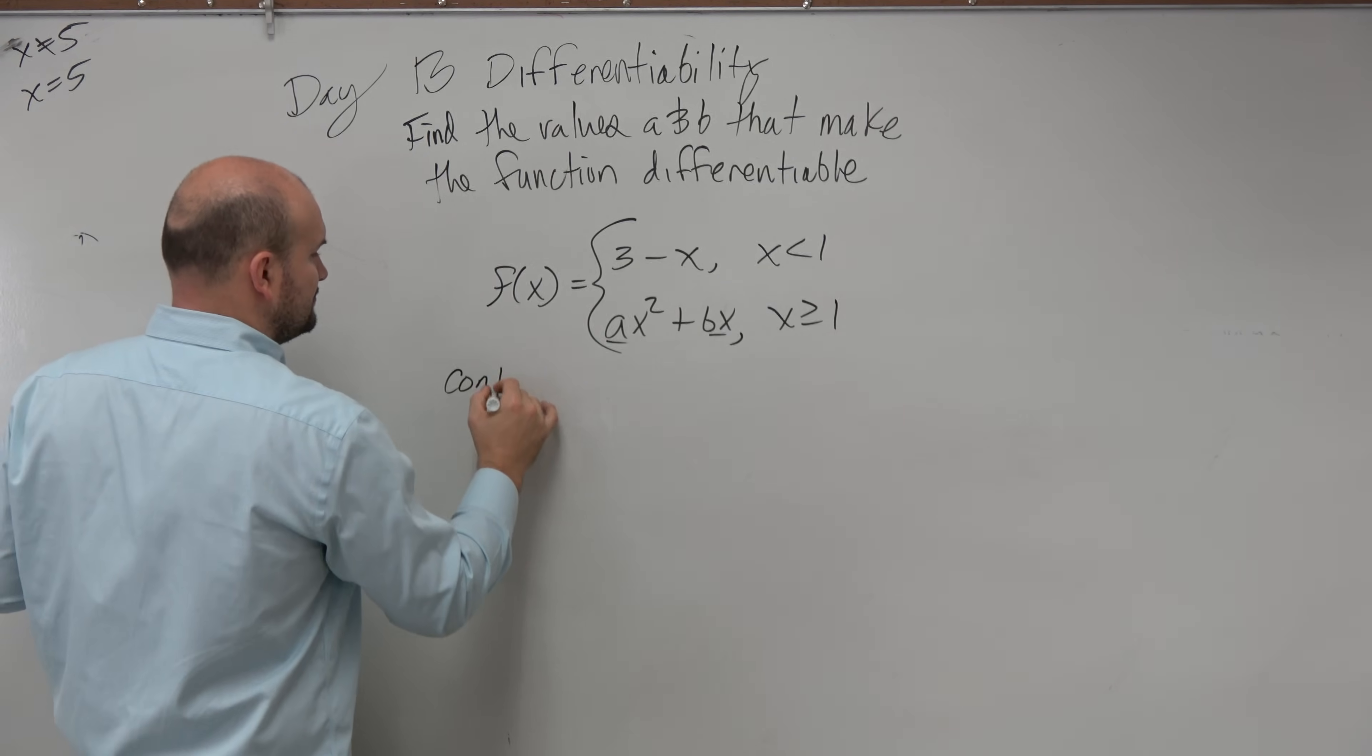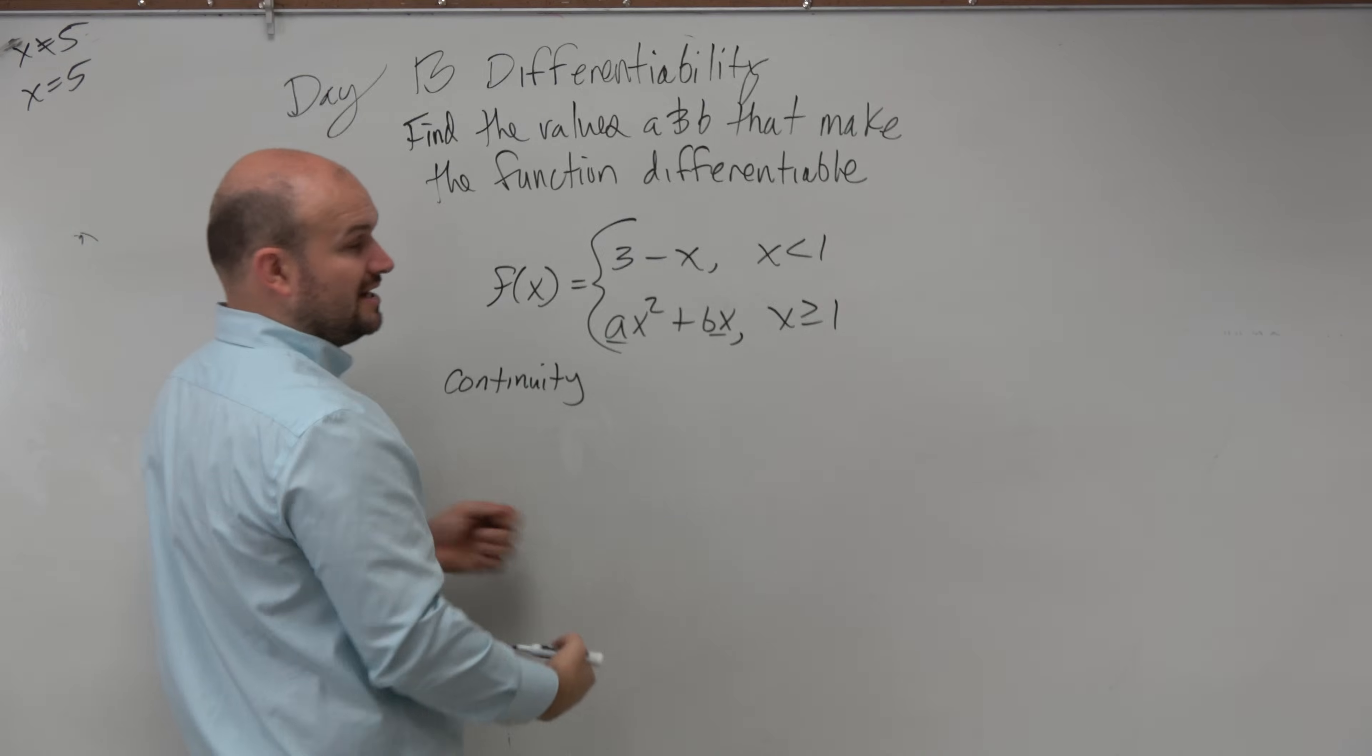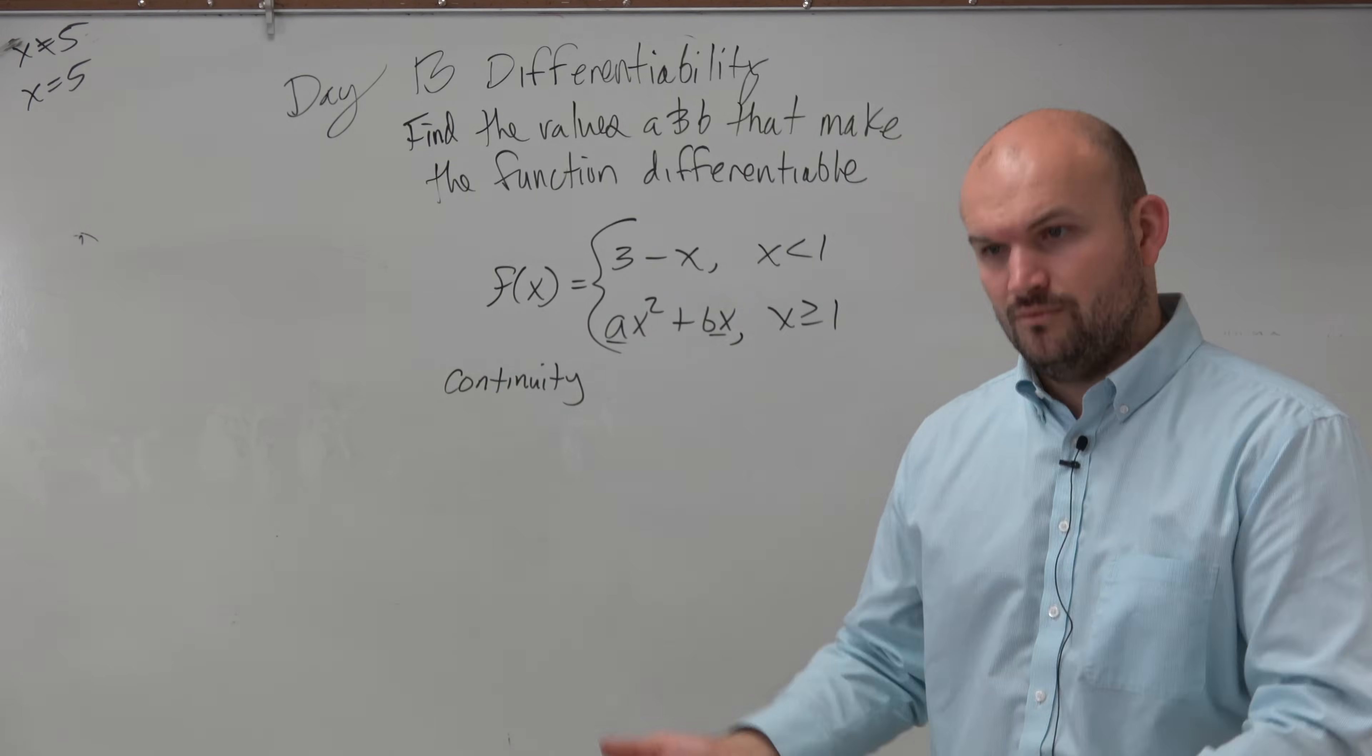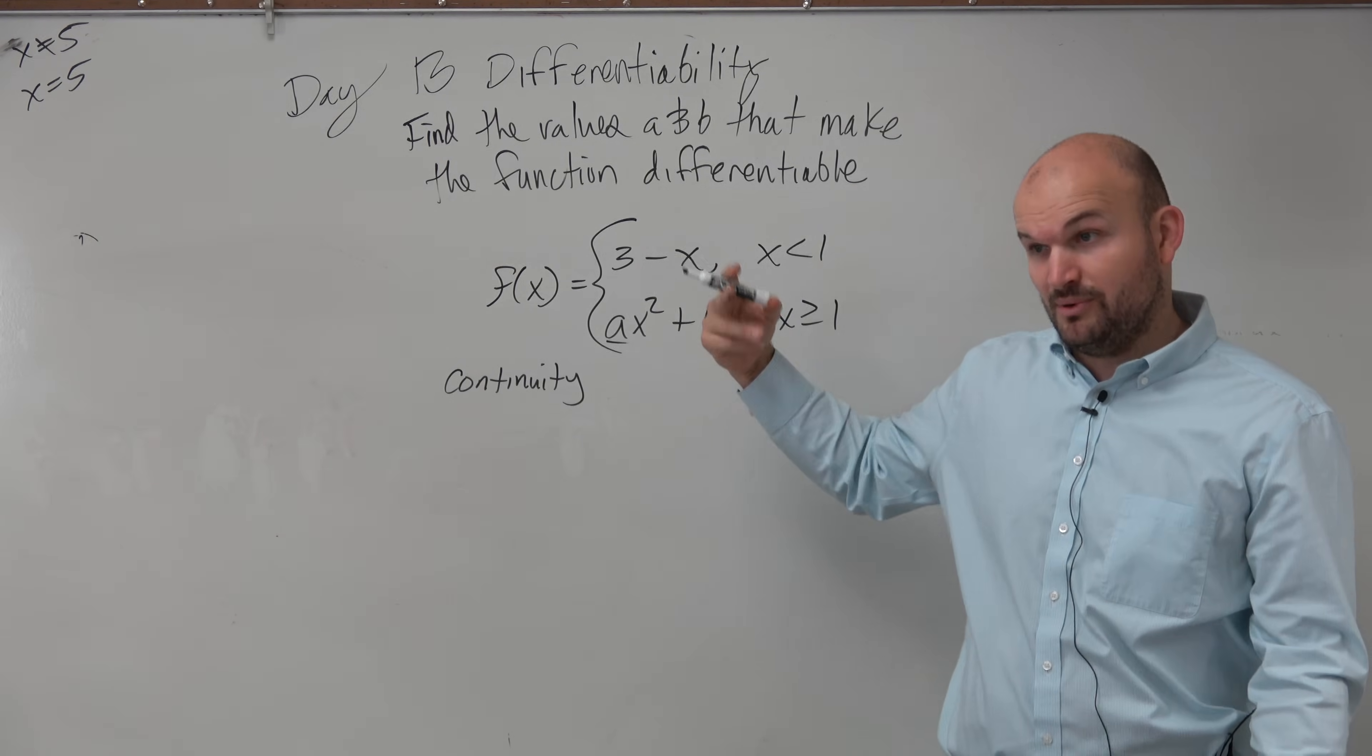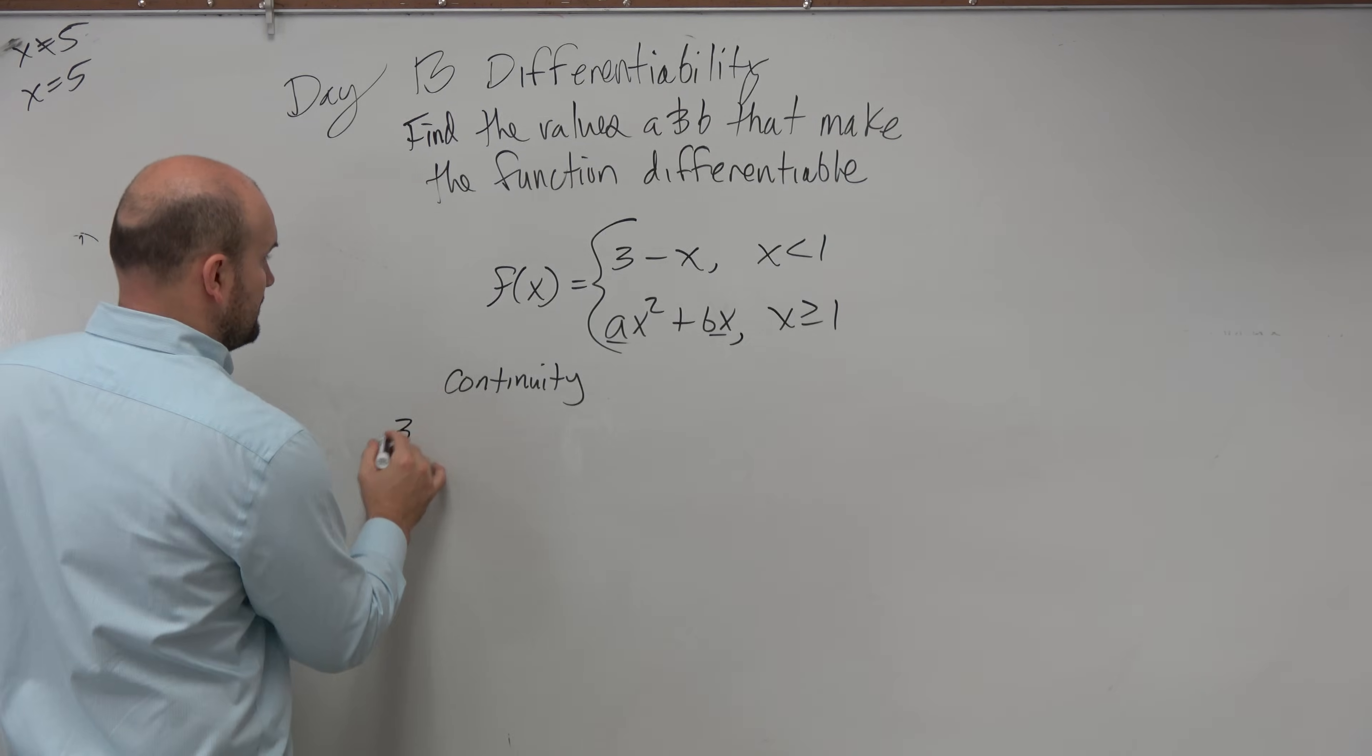So, let's check continuity. If I want to check continuity, again, I'm not checking continuity at five, right? I want to check continuity at one, because that's the only—we know this is not a hole, correct? So, we only want to check continuity at where they could dissect or not meet.